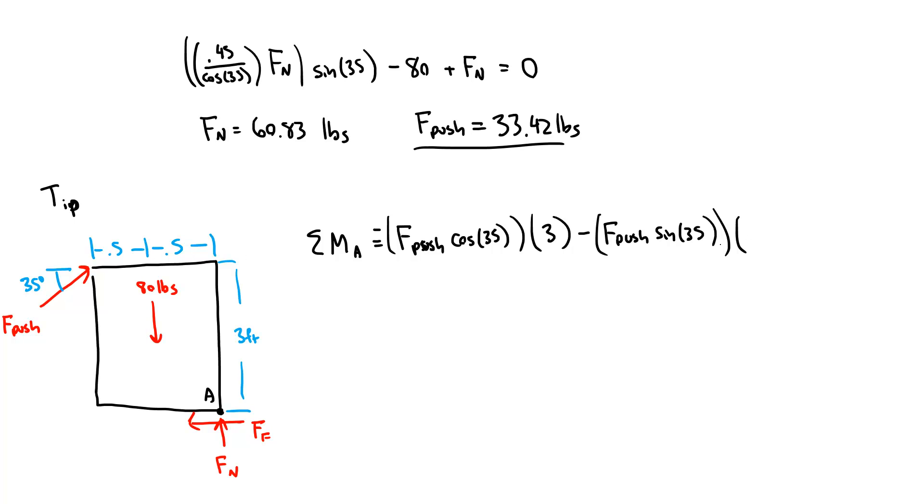And then I'm going to have all that countered by my gravity force here. So 80 pounds, it would cause a clockwise moment. So that's going to be plus 80, and then distance is 0.5. That is the perpendicular distance from this force to point A. So that all needs to add up to 0.